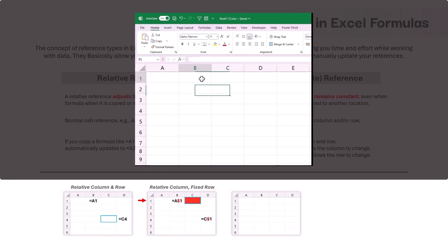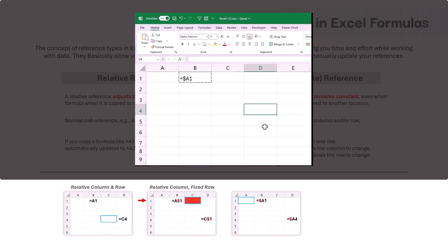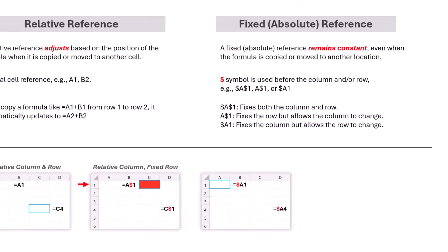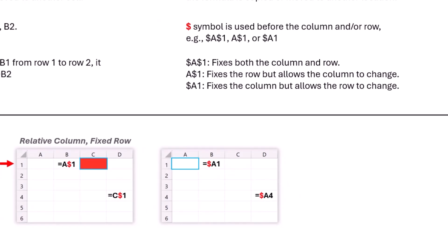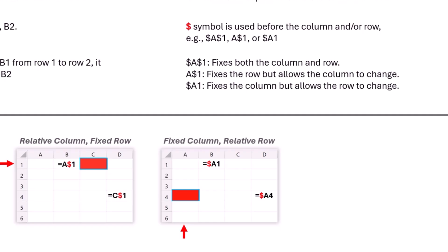In the third scenario, let us enter a formula equal to $A1 in cell B2 — it will point at cell A1, but we have added a dollar symbol in front of the column reference. If we copy this formula to cell D4, the formula updates to $A4. Since we added the dollar symbol to the column reference, the column stays fixed at column A. However, since there is no dollar symbol on the row reference, the row shifts 3 rows down to row 4. So the new reference is $A4. Since only the column reference is fixed and the row is allowed to change, we call this fixed column and relative row reference.